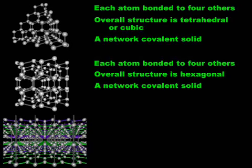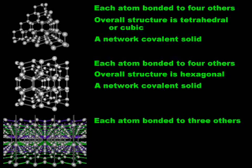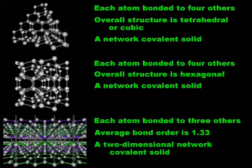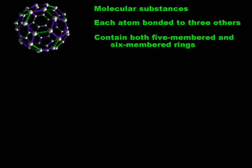Graphite consists of infinite two-dimensional layers of carbon atoms bonded into flat six-membered rings. Each carbon atom is bonded to three others by two single bonds and one double bond, giving an average bond order of 1.33. There is no chemical bonding between these layers, and graphite is said to be a two-dimensional network covalent solid. Fullerenes are molecular substances in which carbon atoms are arranged to form spherical molecules. As in graphite, each carbon atom is bonded to three others. The fullerenes contain five-membered as well as six-membered rings, and the five-membered rings are responsible for the curvature.